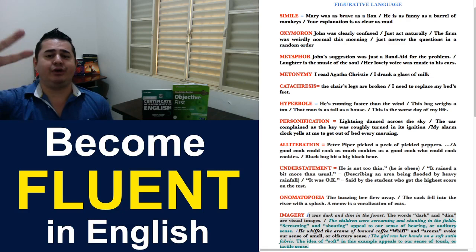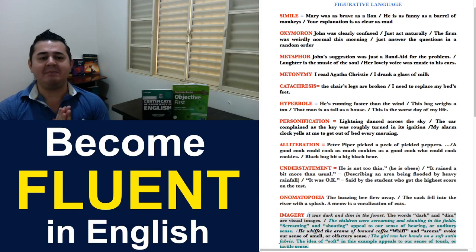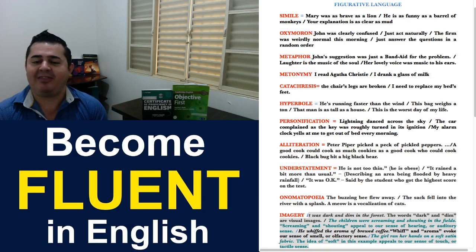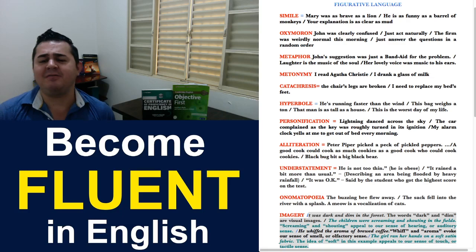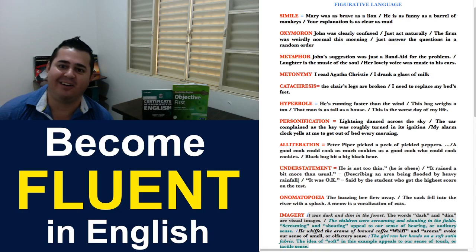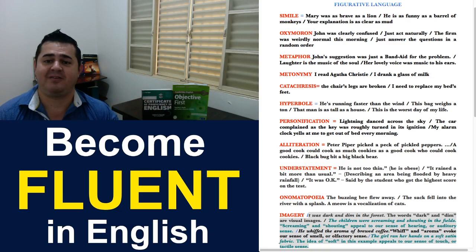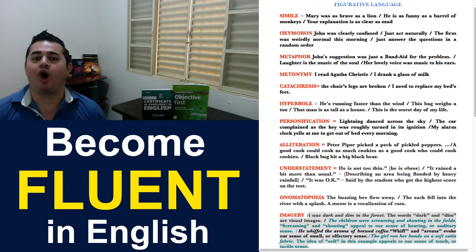Now, let's move to the figurative language number two, oxymoron. Oxymoron basically means when two words with opposite meanings are used together. Some people can be really confused because they're using two opposite meanings in the same sentence. Example number one: John was clearly confused. So, if he was confused, how is it possible to be clearly? Clearly is the opposite of confused. And they're used together.